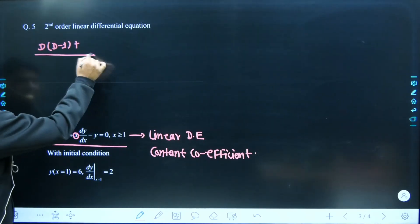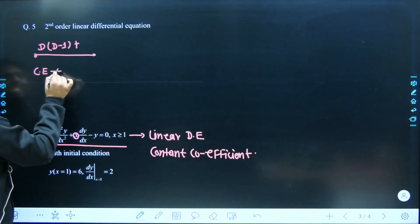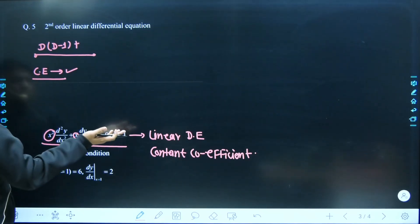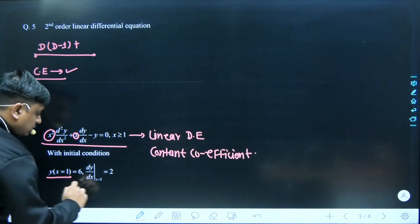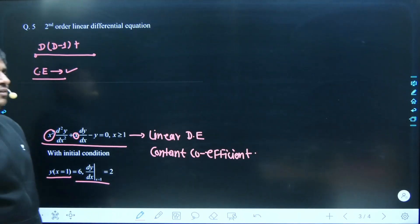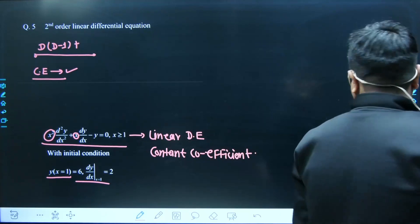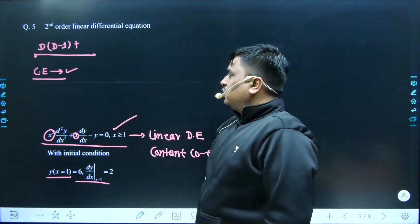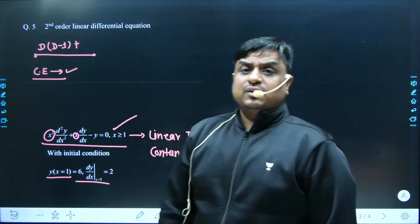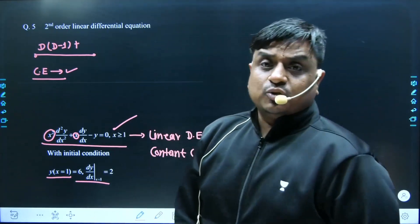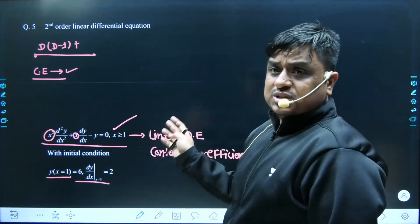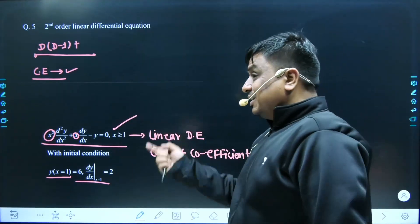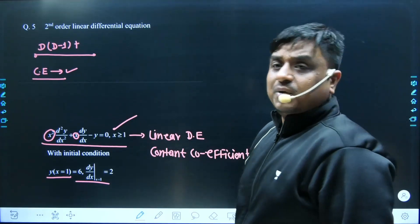Once you have this, you will get the characteristic equation, then the general solution, then feed x = e^t again and apply the two given conditions. The question is not complete here so I am not showing the exact answer, but you can expect this kind of question — a differential equation that is linear in nature but whose coefficients are functions of x, which can still be converted to constant coefficient form.